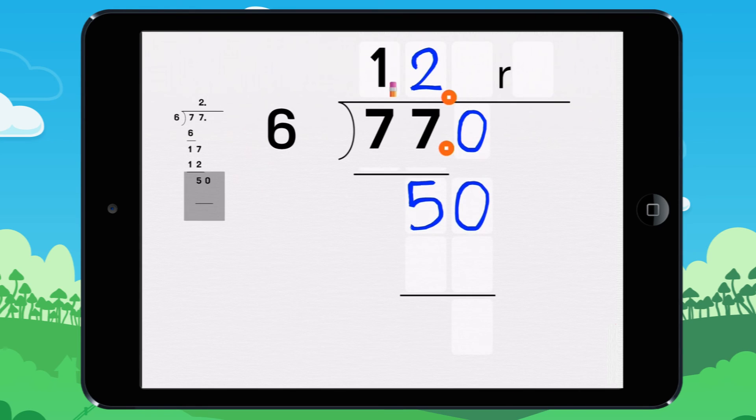How many times does 6 go into 50? It goes into it 8 times because 8 times 6 equals 48. Now what is left over? 50 minus 48 equals 2. The remainder is 2.